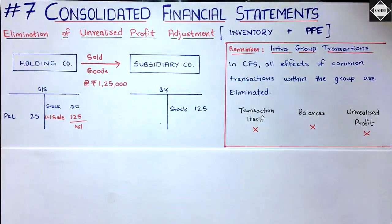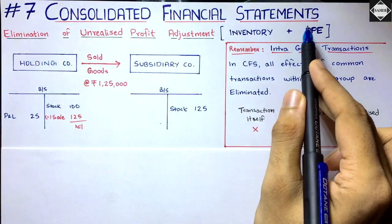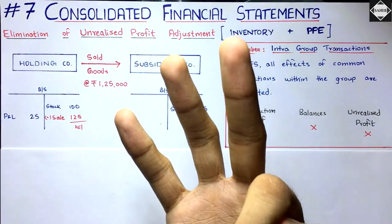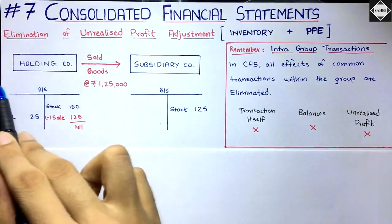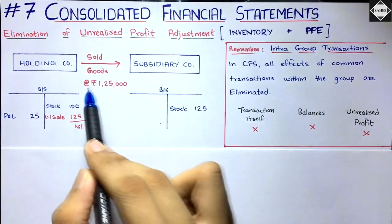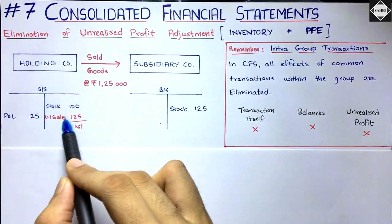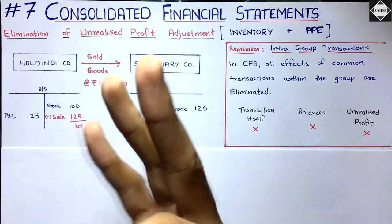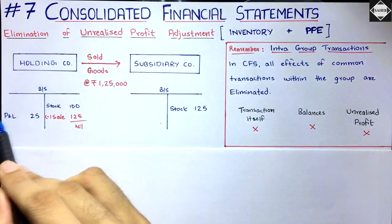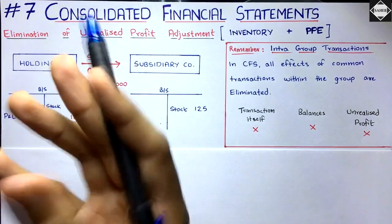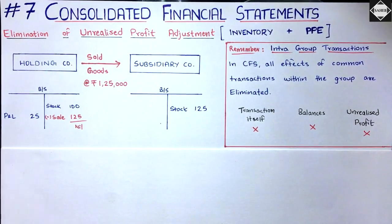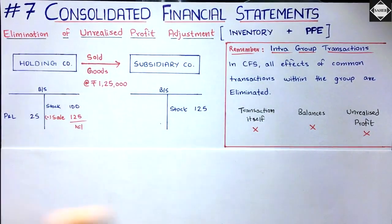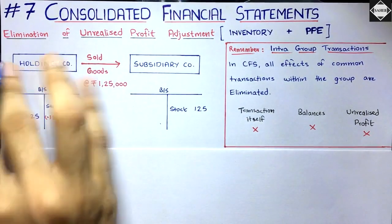First let's understand what will be the effect of this transaction in separate financial statements, and then we'll talk about consolidated financial statements. In the separate financial statements of the holding company, three things will happen: they will record the sale at one lakh twenty-five thousand, reduce the stock by one lakh, and recognize a profit of twenty-five thousand.